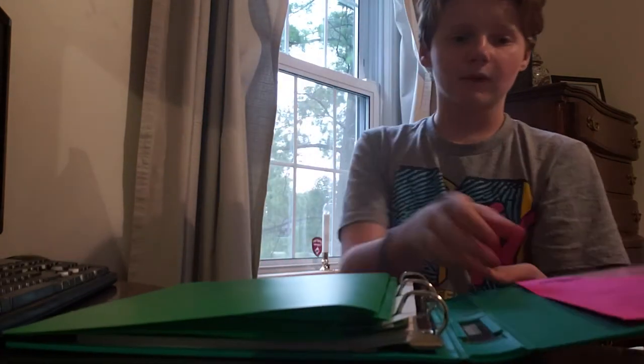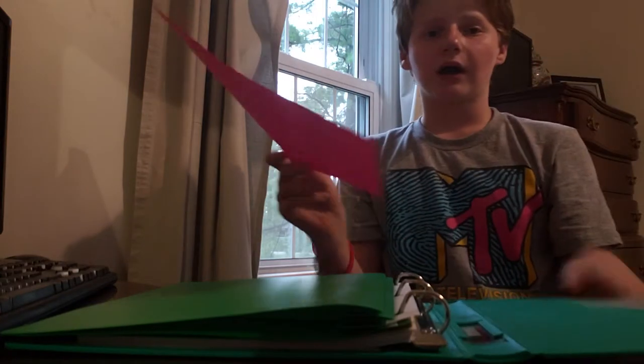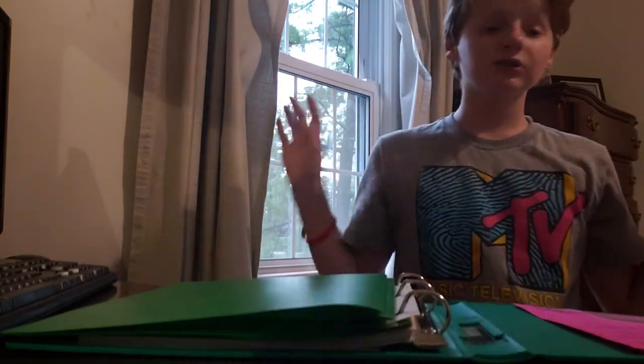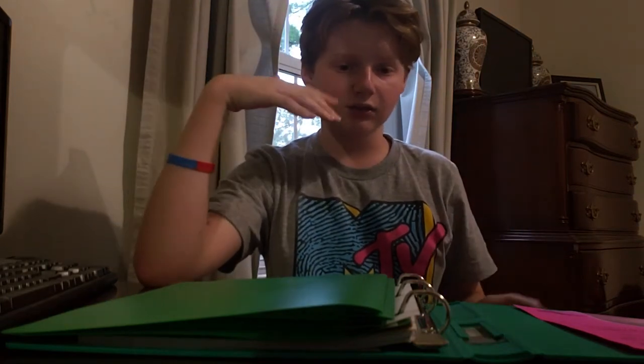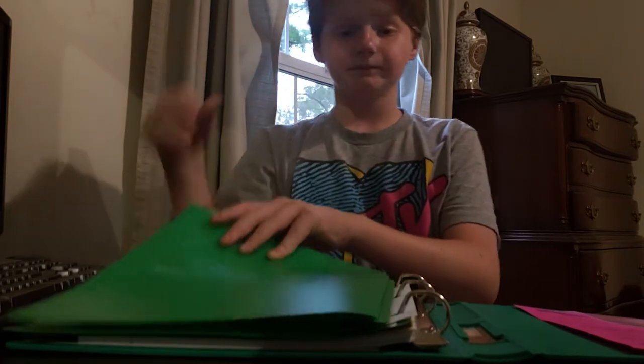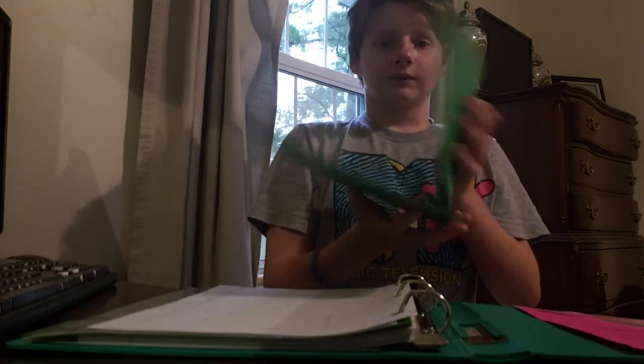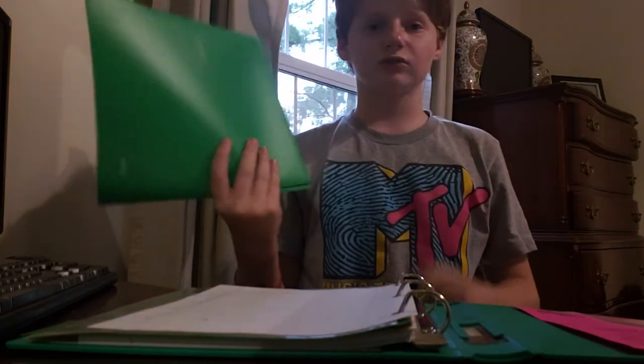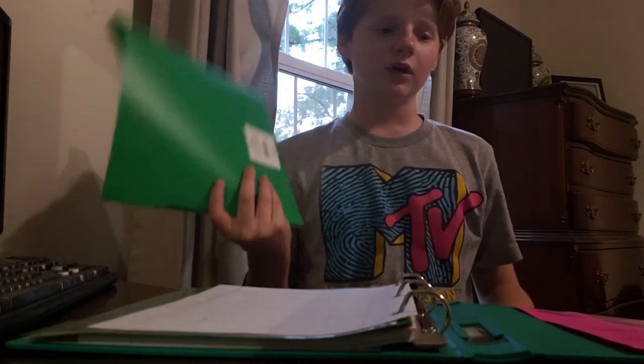So we're going in order so after fourth and fifth period I go to sixth period science class. This is a one inch binder, one inch thick binder. It isn't that thick. But right here in the pocket I have a pink science club sheet. I don't think I'm gonna do it this year because no, no that's not happening today because I wanted to do the yearbook committee which I've never done before which I've had chances in other years but I just haven't.